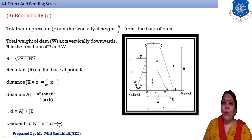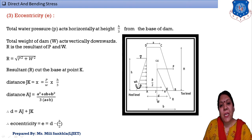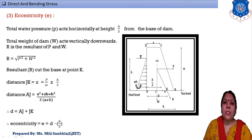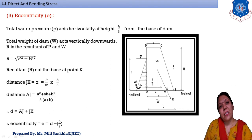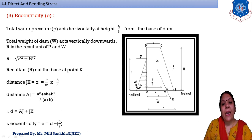The resultant R cuts the base at point K. To find jk: P rotates clockwise with moment arm h/3, and W rotates anticlockwise with moment arm jk. Therefore jk = (P/W) × (h/3). The distance 'aj' is the CG of the trapezium section: aj = (a² + ab + b²) / [3(a + b)].